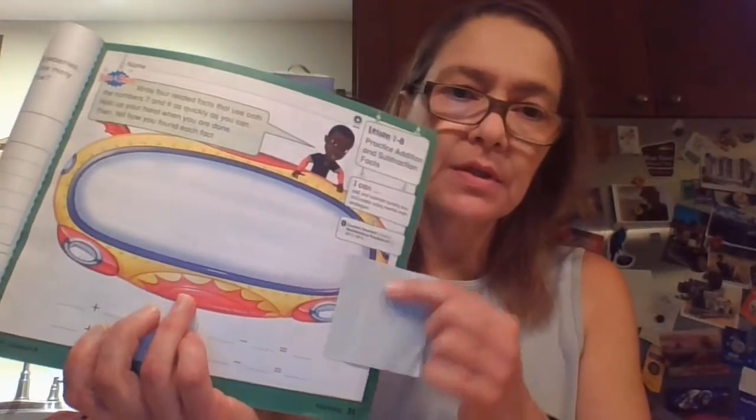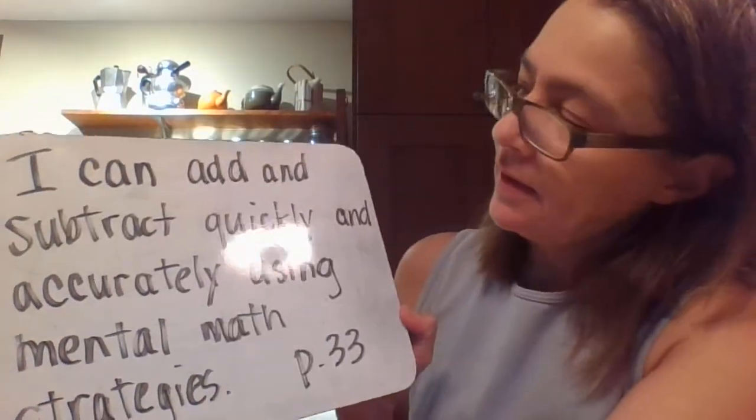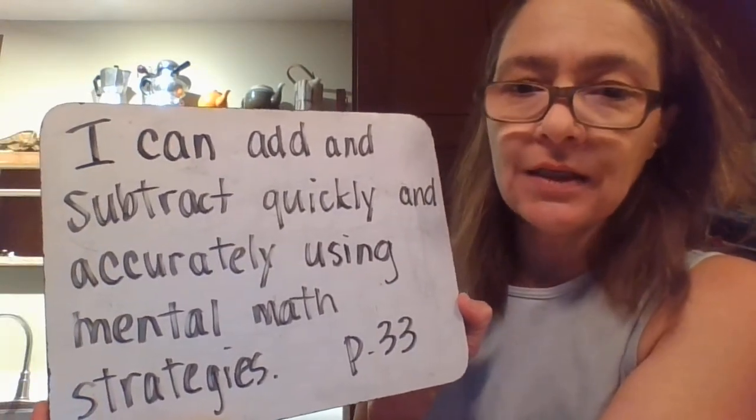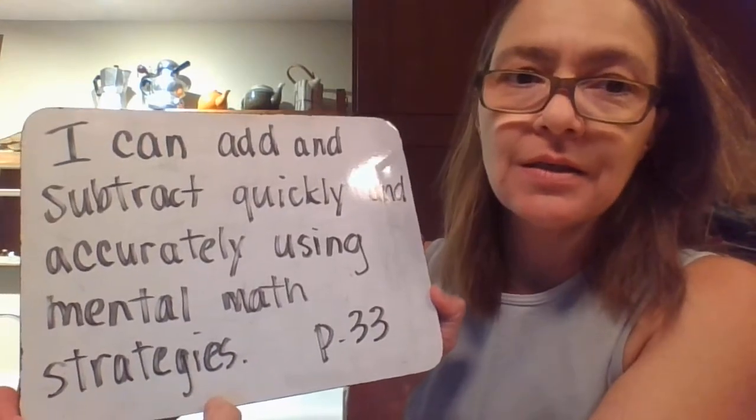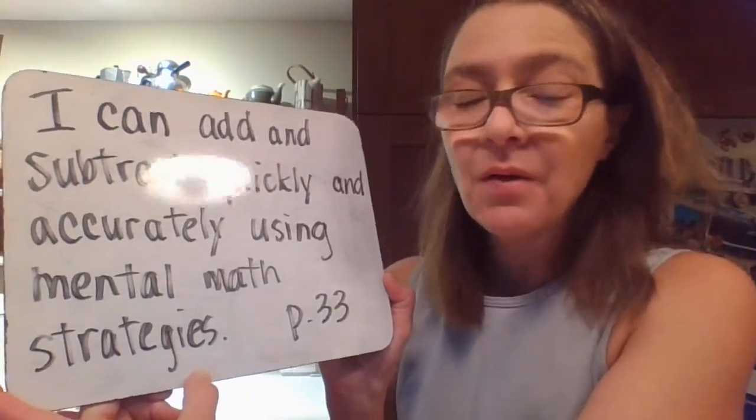We're going to read the I can statement on page 33: I can add and subtract quickly and accurately using mental math strategies. We have been doing some mental math strategies — one of them was making tens, another was doubles facts and near doubles facts, another was counting on and counting back. We are going to take what we have been learning and add quicker and more accurately.